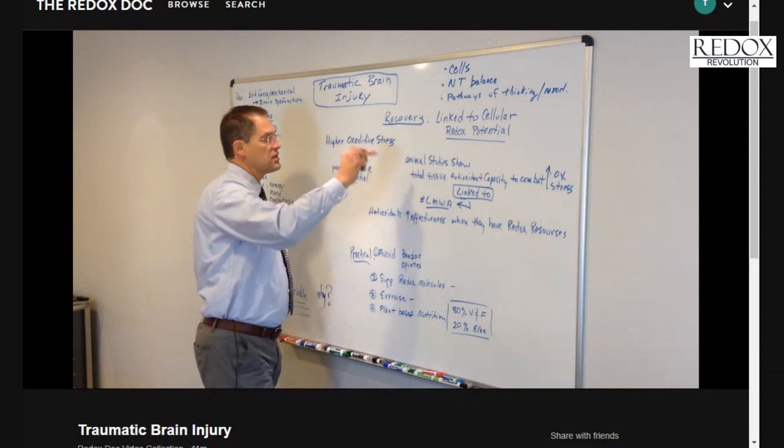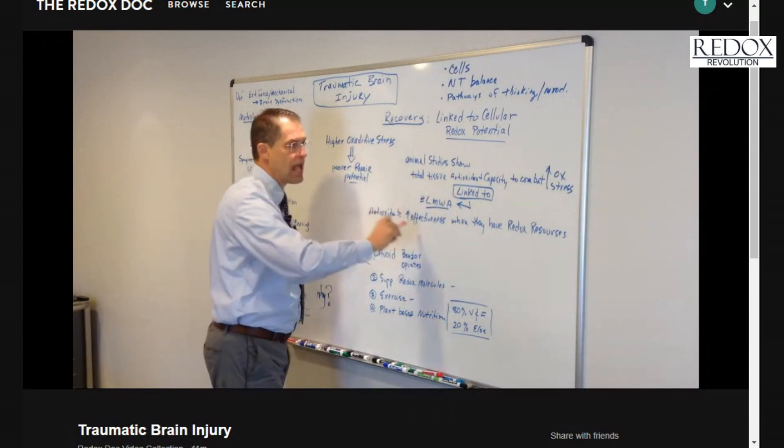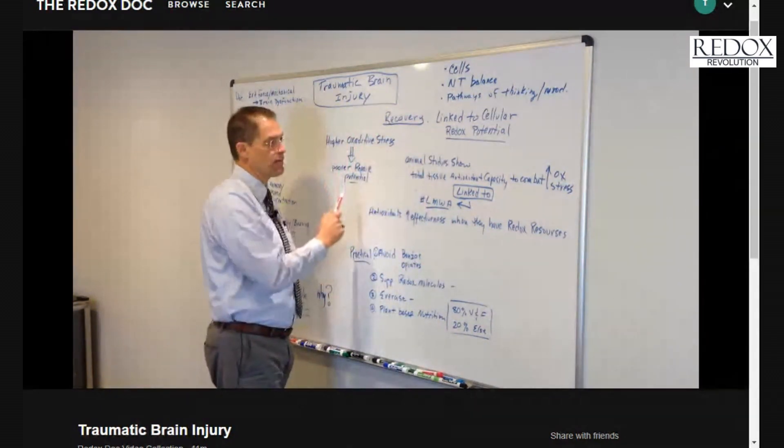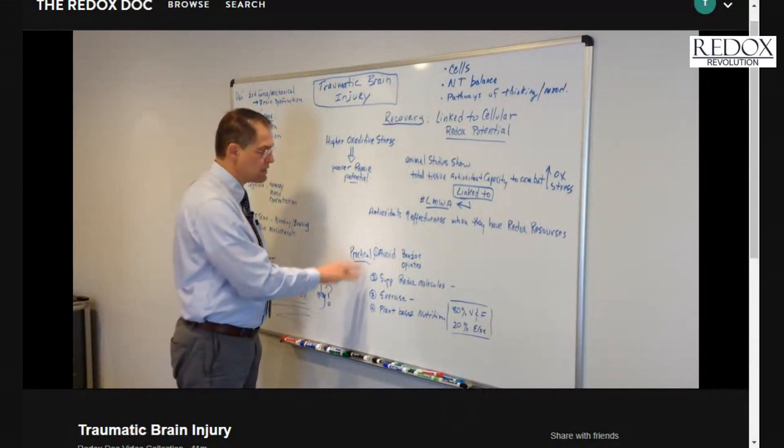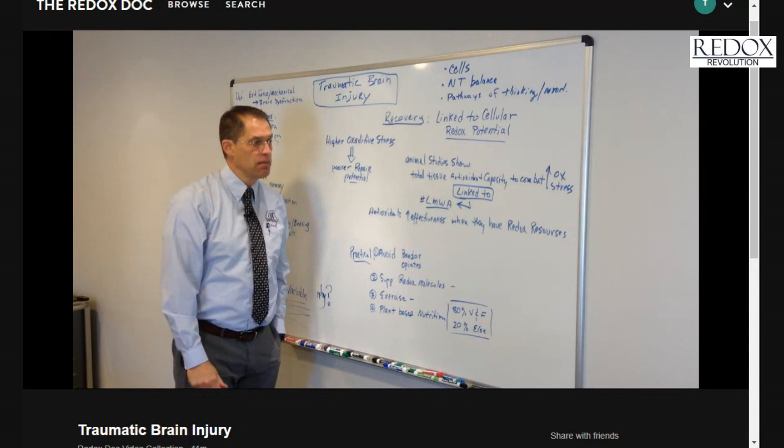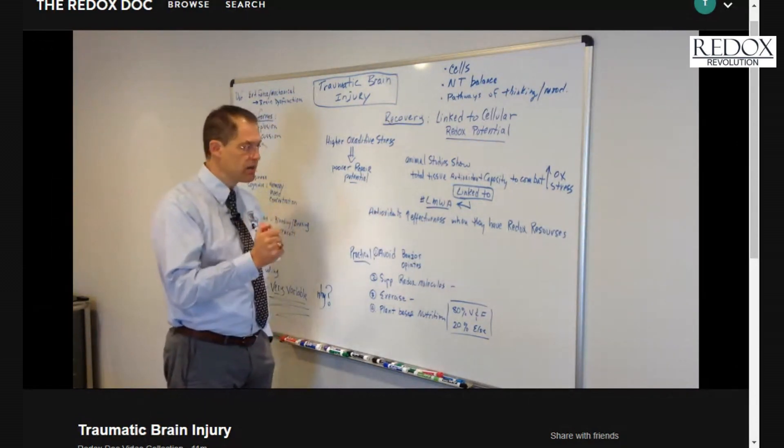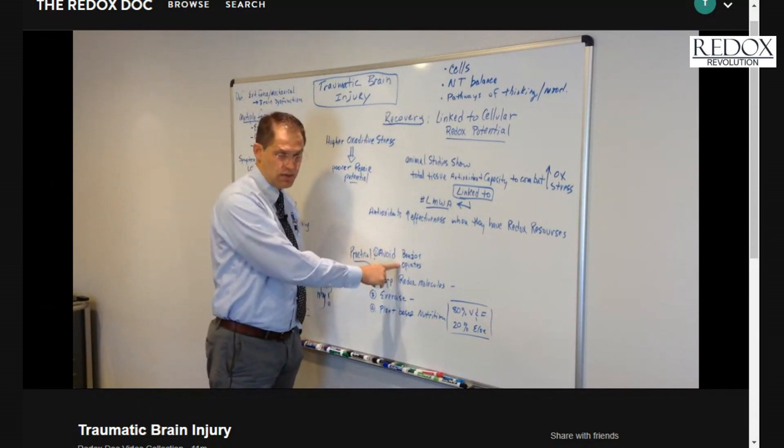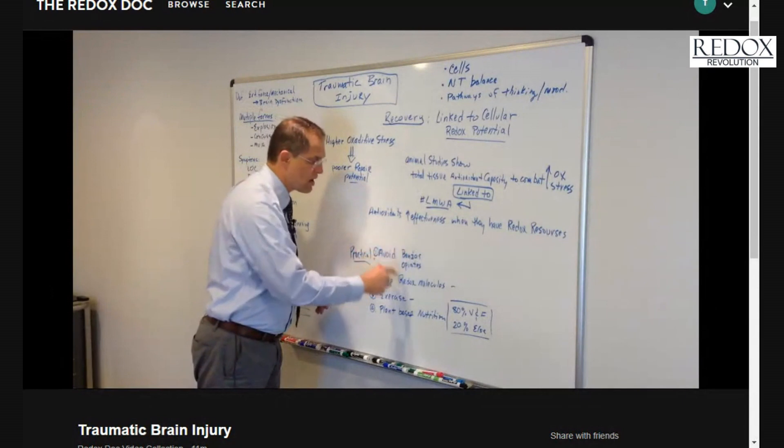So our ability to do repair work is linked to how many antioxidants we have and redox resources that they have to work with to contend and deal with the repair work. And so, just from a practical standpoint, I would like to suggest a few things. If you happen to know somebody who's dealing with traumatic brain injury, make sure that they're working with a very skilled health professional because it's a serious process that needs a lot of work. But I would caution you to avoid benzodiazepine drugs and opiate drugs.